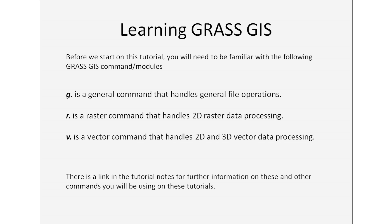Before we start, you need to familiarize yourself with a few commands and modules for GRASS GIS. G dot is a general command that handles general file operations. R dot is a raster command that handles two-dimensional raster data processing. V dot is a vector command that handles two-dimensional and three-dimensional vector data processing. There's a link in the tutorial notes for further information on these and other commands that you will be using throughout the whole series of tutorials.